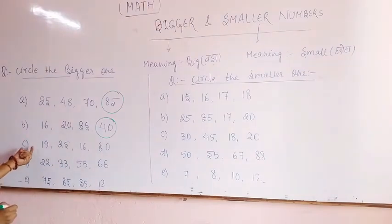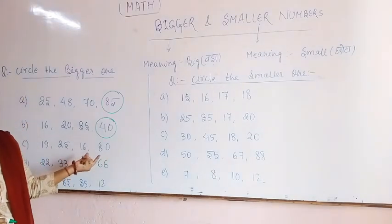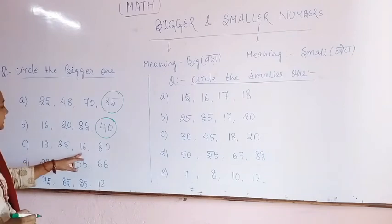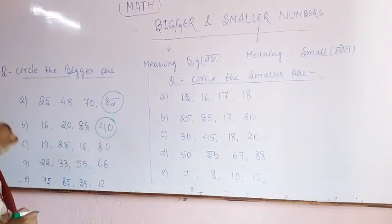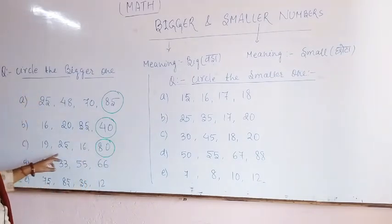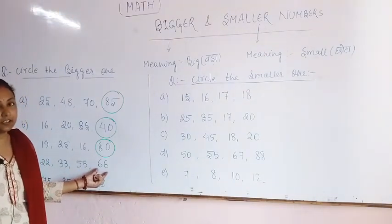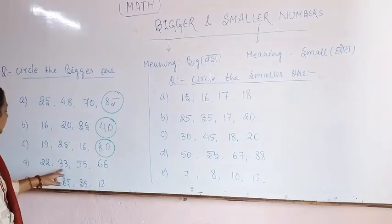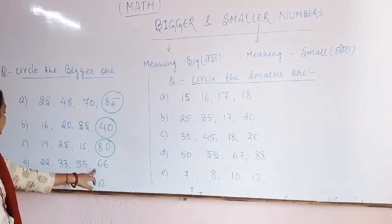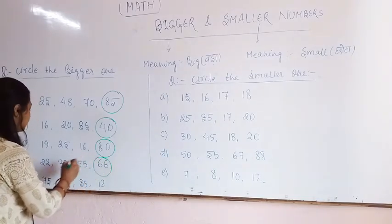Question number 1: the numbers are 19, 25, 16, and 18. Which one is the bigger one? 25 is the bigger one. The next question is 22, 33, 55, and 66. Which one is the bigger one? 66 is the bigger one.